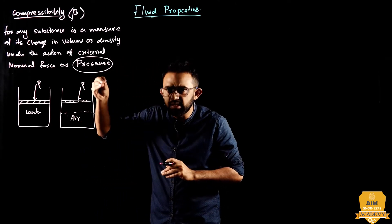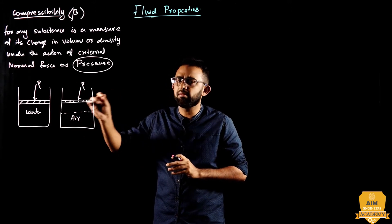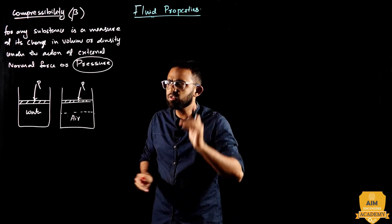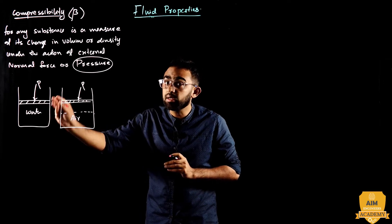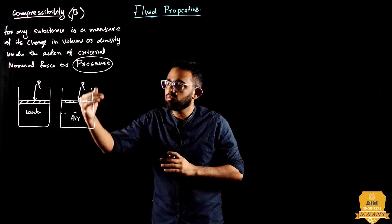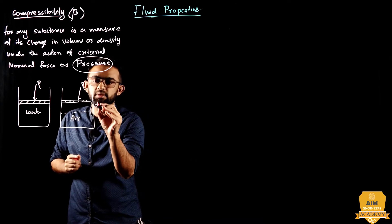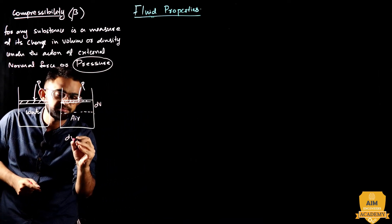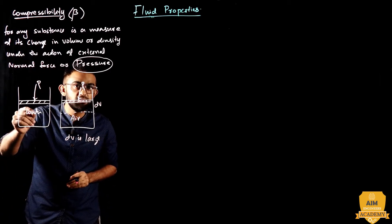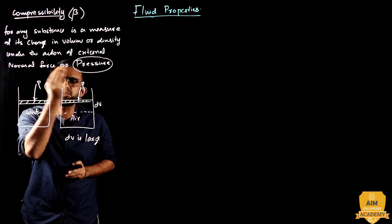Air is very easy to compress. When we compress the piston, the volume change dV for air is large. But for water, the human eye sees no visible change. Microscopically, the water volume change is negligibly small.